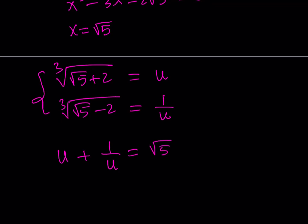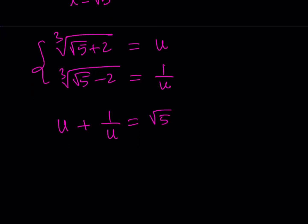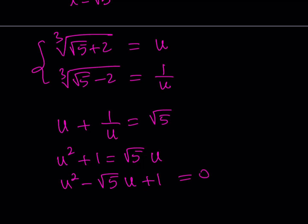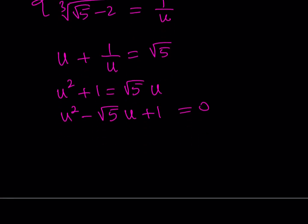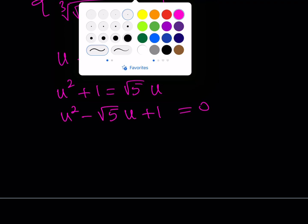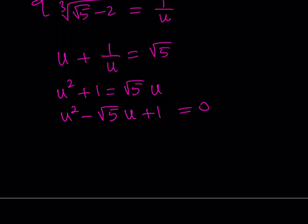I'm trying to find u, and I have u + 1/u = √5, so this becomes a quadratic equation. Multiplying both sides by u gives u² + 1 = √5·u, which rearranges to u² − √5·u + 1 = 0. Using the quadratic formula, the two solutions are u = (√5 + 1)/2 or u = (√5 − 1)/2.